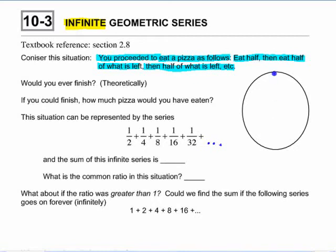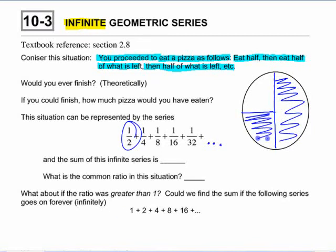You start by eating half. This is what you eat here. And then you eat half of what's left, and now you have in total, how much have you eaten? After the first two, you've got three quarters. And then after the next piece you eat, you have in total seven-eighths.